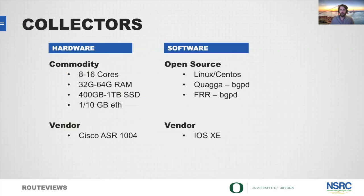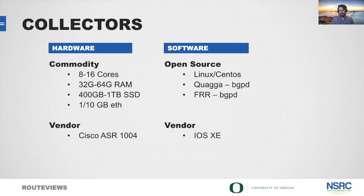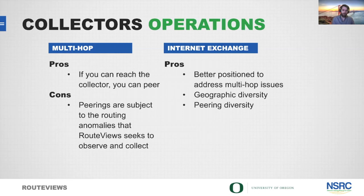What exactly is a Route Views collector? In most cases it's commodity off-the-shelf hardware — a 1U box with anywhere from 8 to 16 cores, 32 to 64 gigs of RAM, 400 gigs of storage, and 1 to 10 gigabit ethernet depending on the exchange. We run an open source routing software called FRR as our BGP daemon. We also have some older collectors running Quagga, which is what FRR was forked from, and they all run on top of Linux and CentOS. We do have one hardware router — a Cisco ASR running IOS XE.